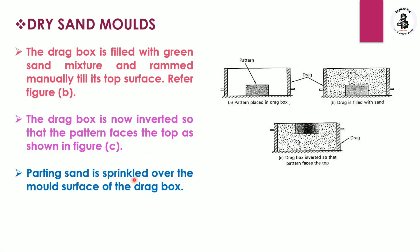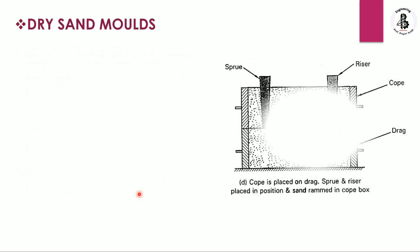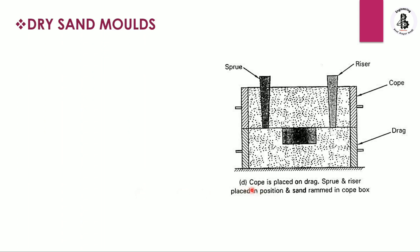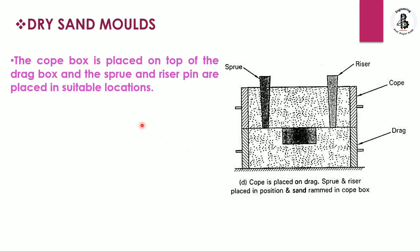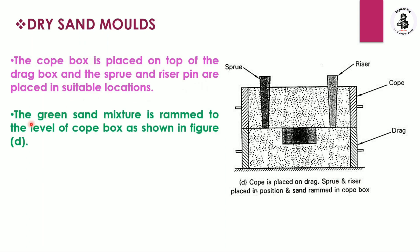Once again, parting sand is sprinkled over the mold surface of the drag box. Then the cope is placed onto the drag with the help of pins, and sprue and riser pins are placed in suitable locations. The green sand mixture is rammed to the level of the cope box, forming the combination of cope and drag separated by a parting line, with the pattern in the drag portion.